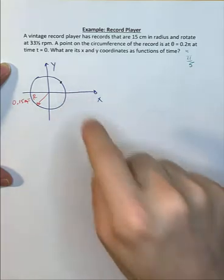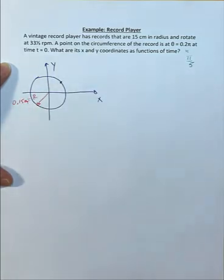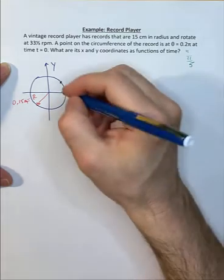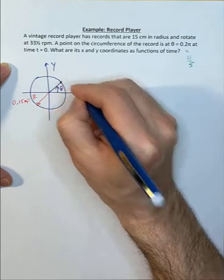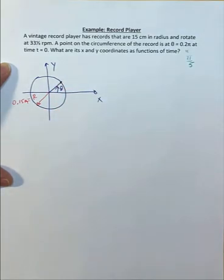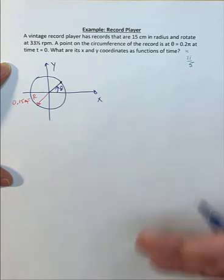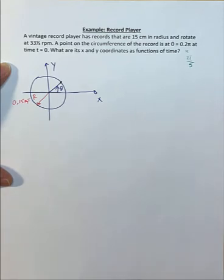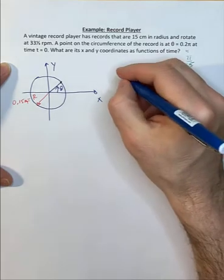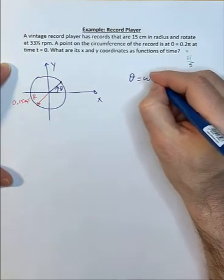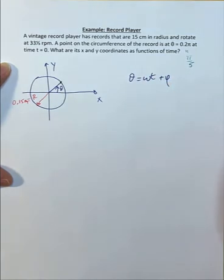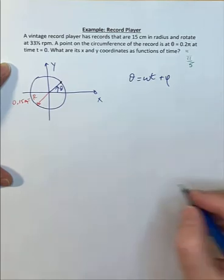The question is for that point as it rotates around in its motion, what are the x and y coordinates as a function of time? This is our point here. We have this angle theta, and it's circular motion. Circular motion and simple harmonic motion are related. That angle theta is changing over time, so theta is going to be omega t plus phi.